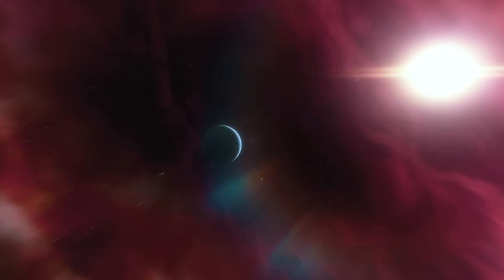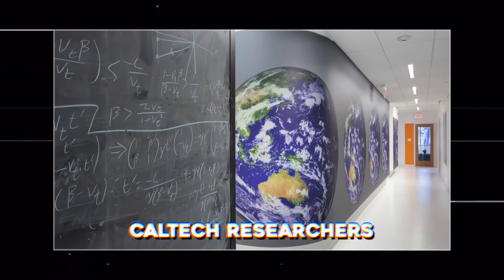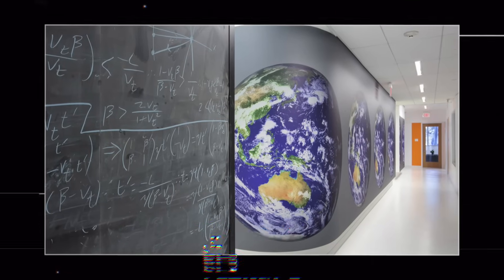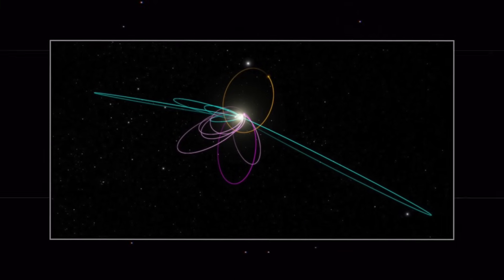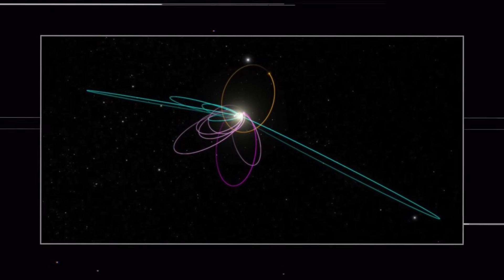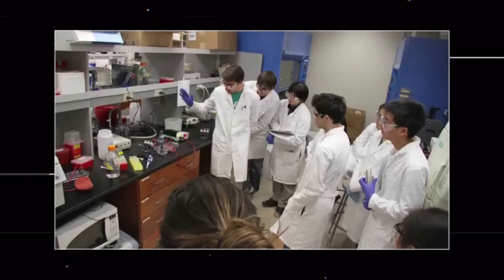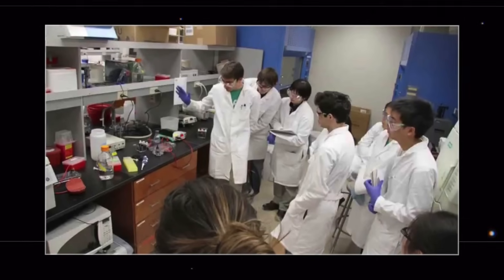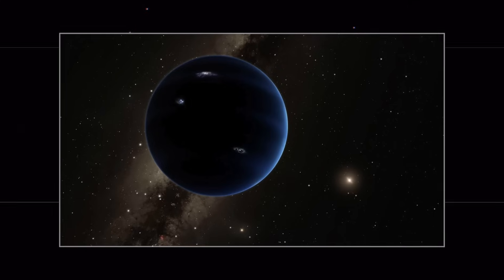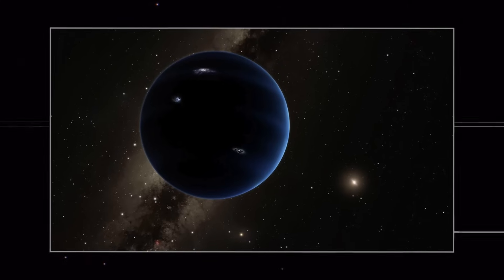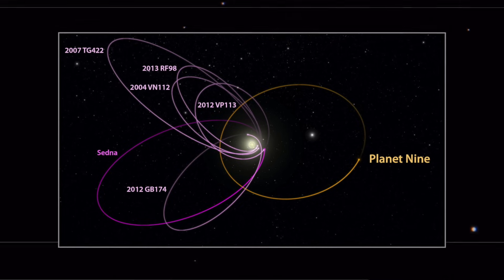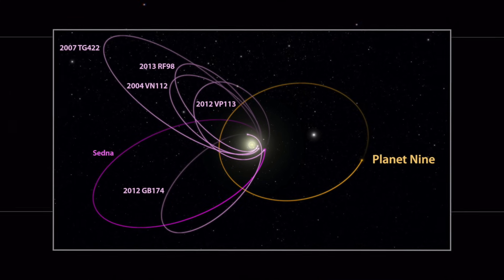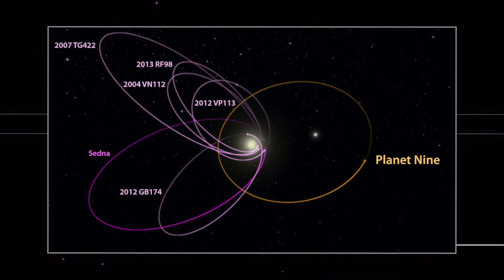Caltech researchers have found mathematical evidence suggesting there may be a Planet X deep in the solar system. This hypothetical Neptune-sized planet orbits our sun in a highly elongated orbit far beyond Pluto. The object, which researchers have nicknamed Planet 9, could have a mass about 10 times that of Earth and orbit about 20 times farther from the sun on average than Neptune.